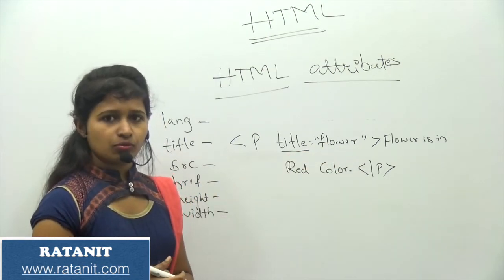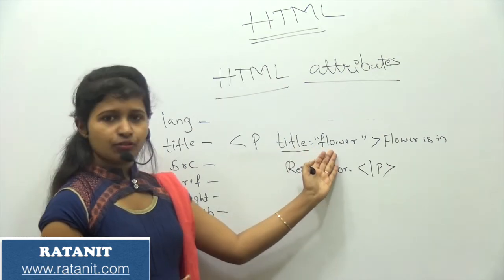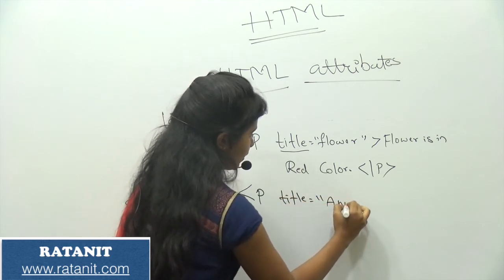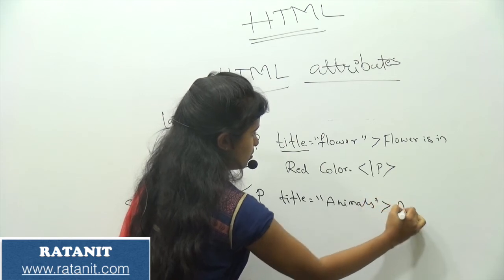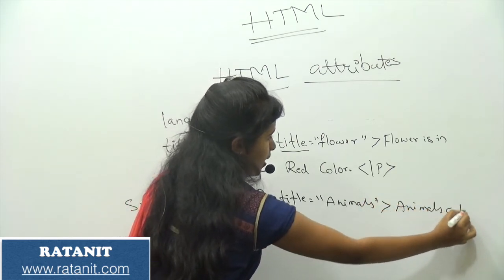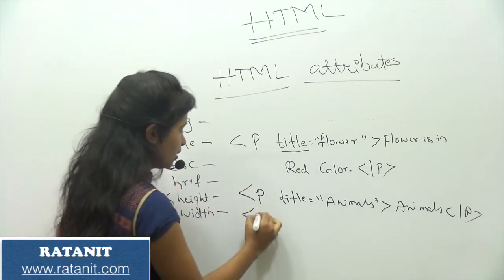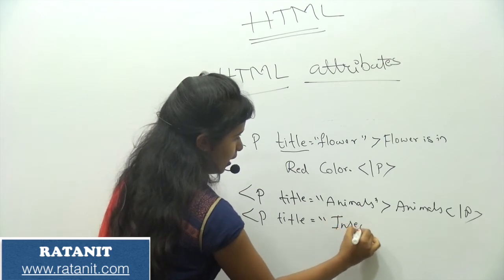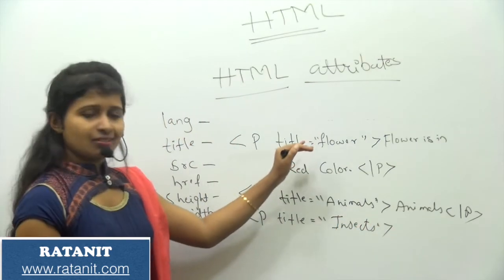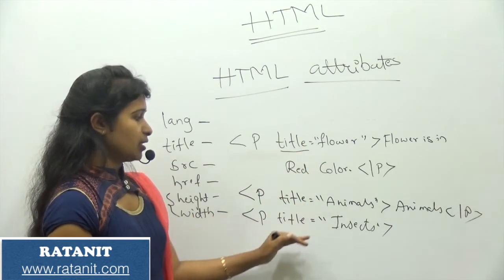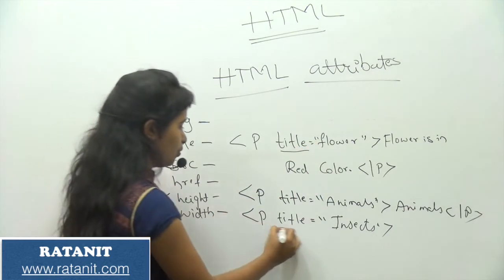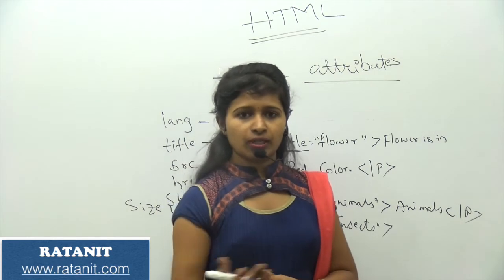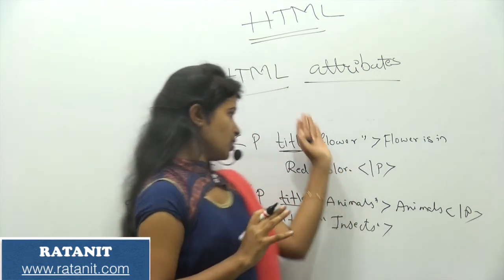For clear identification, we use the title attribute. If this paragraph is about flowers, I use 'flower'. If I have another paragraph about animals, I use 'animals'. If I have another paragraph about insects, I can use 'insects' as the title — just to know what each paragraph is about. You can also use the title attribute in heading portions, anchor tags, and in whatever tags you use.